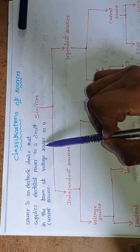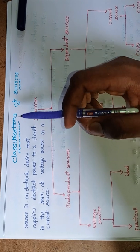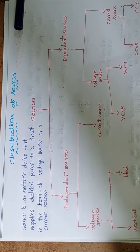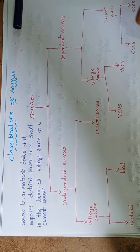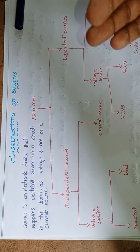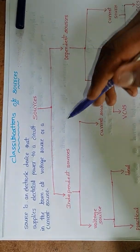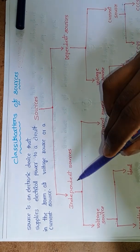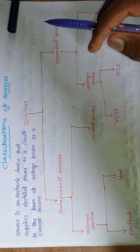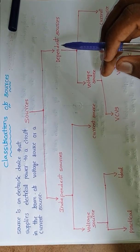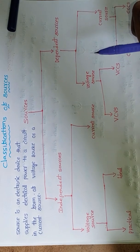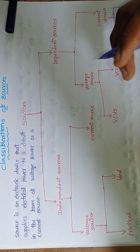A source is an electronic device which is used to supply electrical power to the circuit, in the form of either a voltage source or a current source. Now we are going to see what are the different types of sources in our electronic circuits.